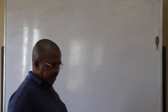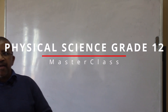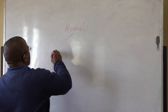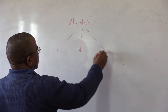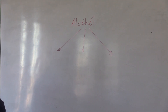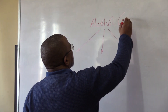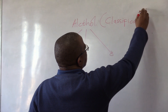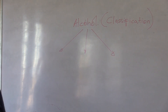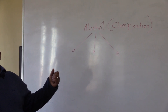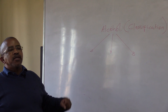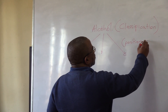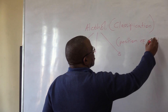In this section we have to classify alcohols. We look at the classification of alcohol. How do we classify alcohols? We classify alcohols by the position of the OH group.